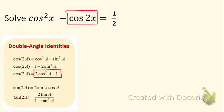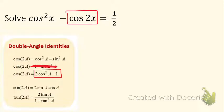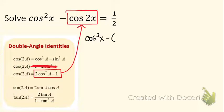I've boxed the double angle identity. Because the other parts of the equation involve cosine, I could use the identity from the last example or the third one. I would definitely not use the second one, because then we would have two different ratios. So this time, let's use the third one and substitute it in for the double angle.